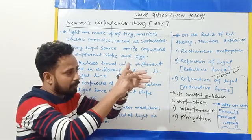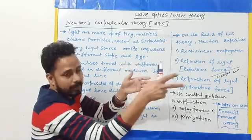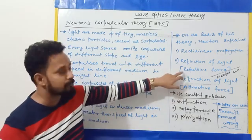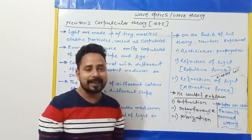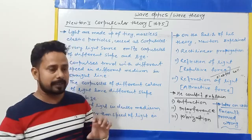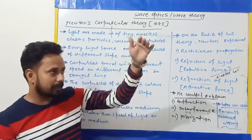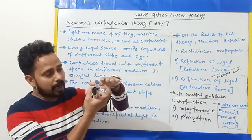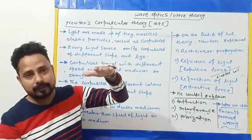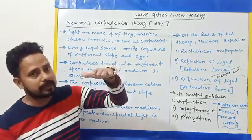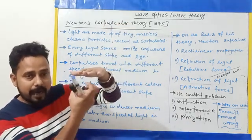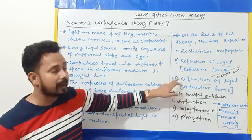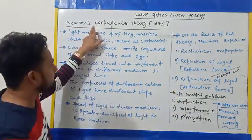Newton explained that there is an elastic collision between the corpuscles and the reflecting surface, and a repulsive force acts during this collision — that is the reason behind reflection. For refraction of light, the reason Newton gave was that there is an attractive force acting on the corpuscles as they enter a denser medium.